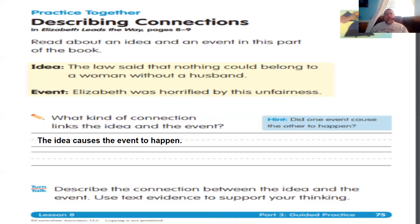If you have time, I want you to discuss this with a brother, sister, parent, or someone you can talk to over the phone. Describe the connection between this idea and this event, and use your text evidence to support your thinking by going back and looking at the two pages we read from 'Elizabeth Leads the Way.'